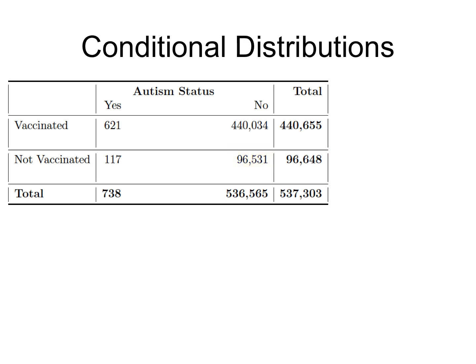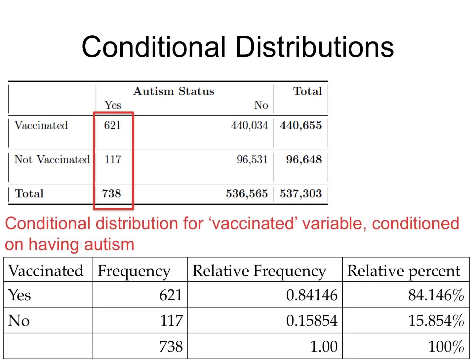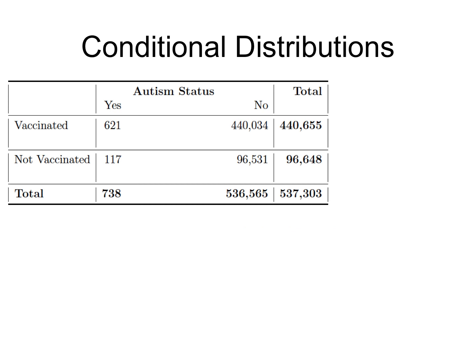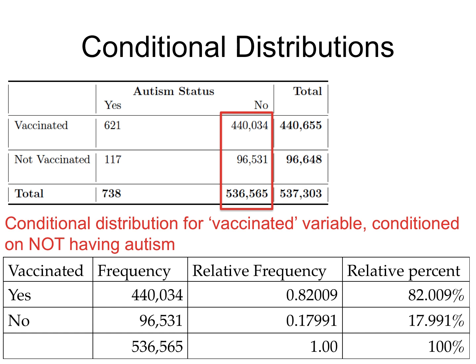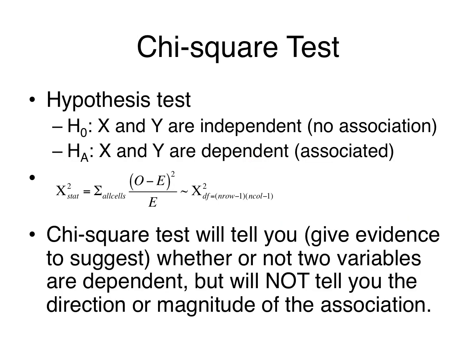Among those who were not vaccinated, 0.121% had autism, while 99.9% did not. We can also look at the first column inside the table to see the conditional distribution for the vaccinated variable, conditioned on having autism: among those who had autism, 84% had been vaccinated, while 16% had not. And in the second column, of those who did not have autism, 82% had been vaccinated while 18% had not.